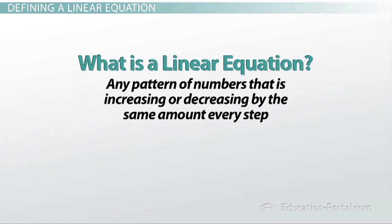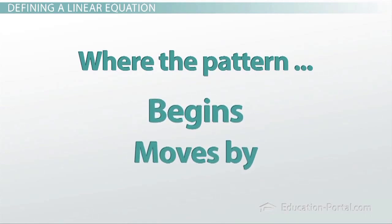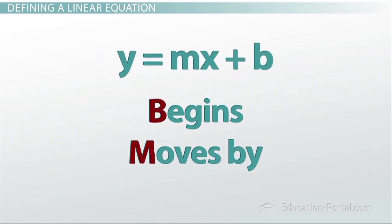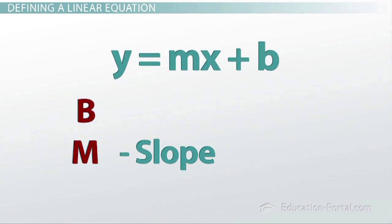This means that the only two things we need to define a linear equation are where the pattern begins and how much the pattern moves by. What that leaves us with is the slope-intercept form of a linear equation, where the m value is our slope and the b value is the y-intercept.